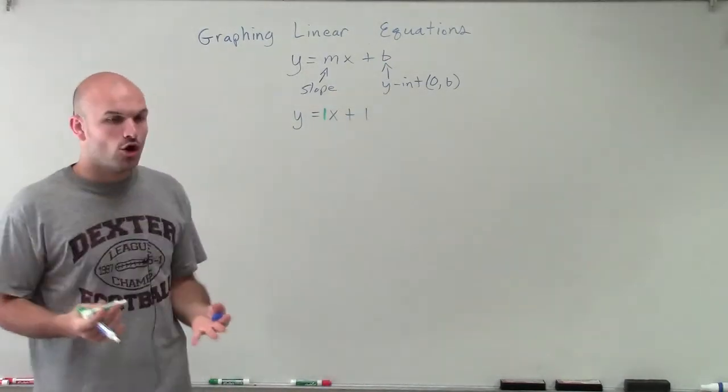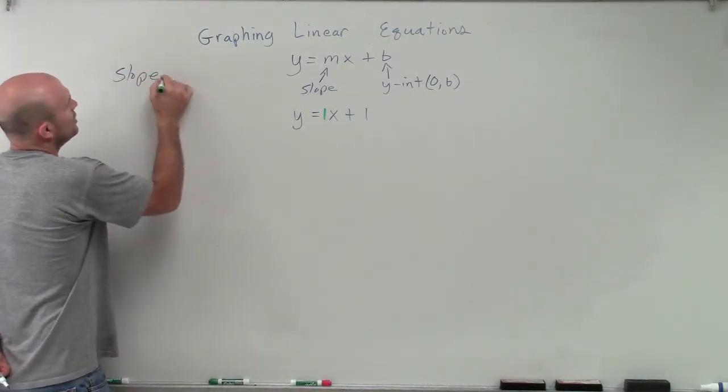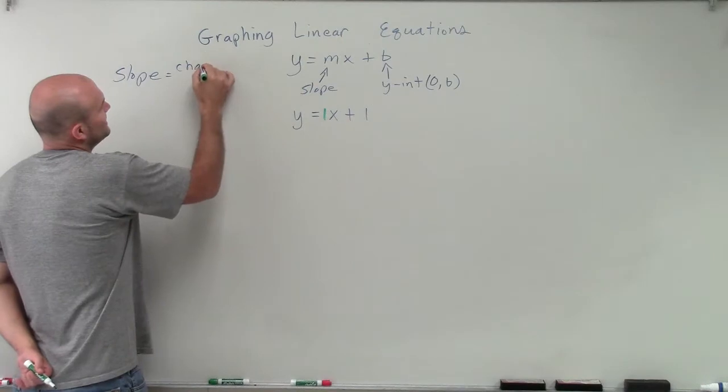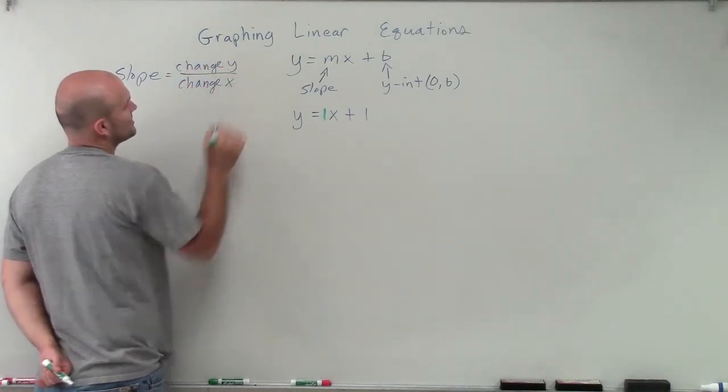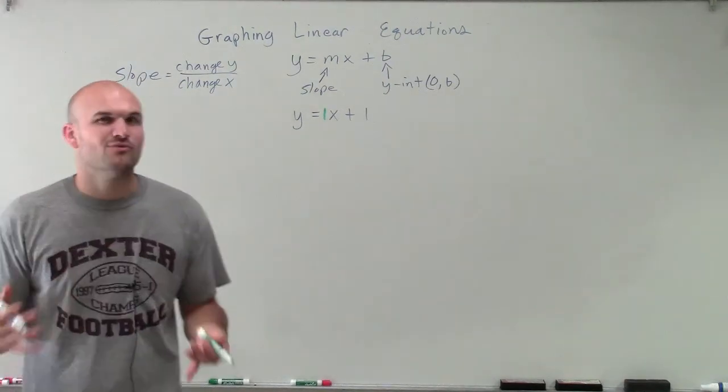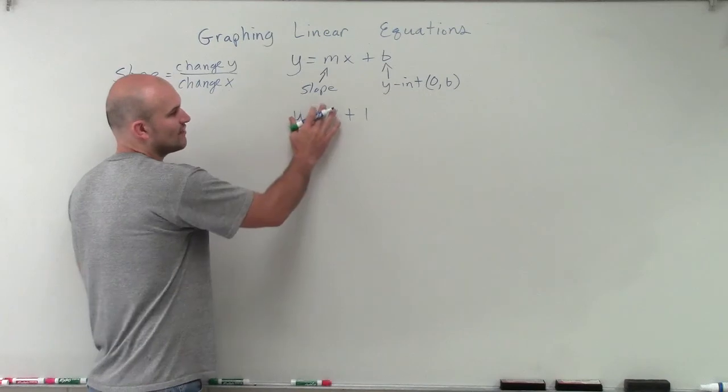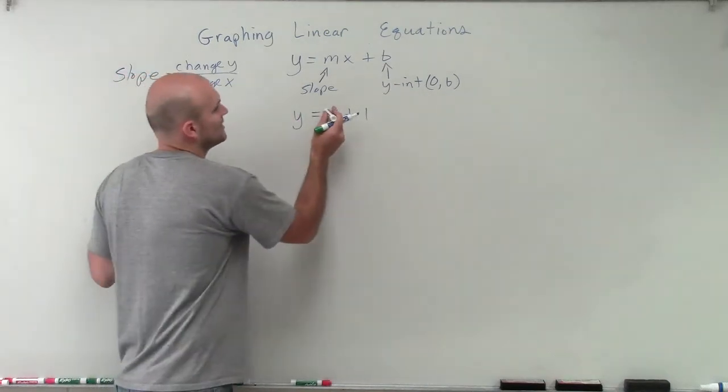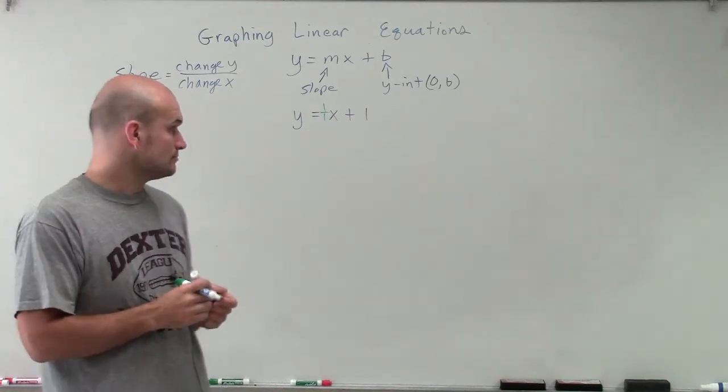However, remember slope, we always write our slope as a change in our y-coordinate over a change in our x-coordinate. So we always want to write our slope as a fraction. Well, 1, how can I write 1 as a fraction and keep it the same value? I can rewrite this as 1 over 1.